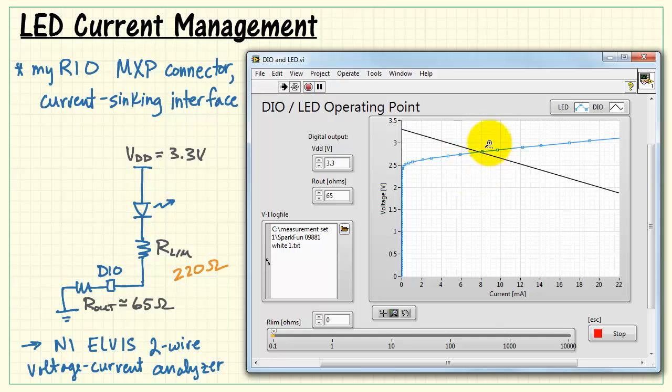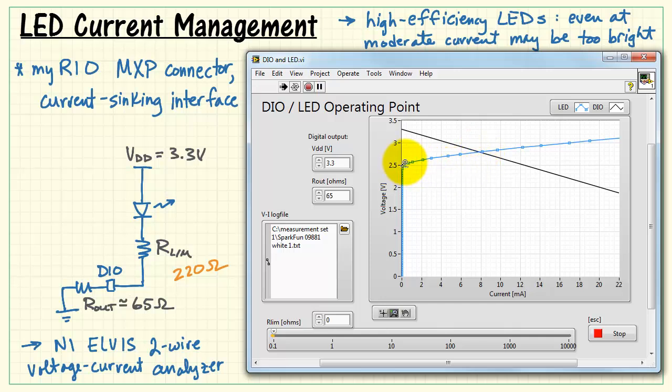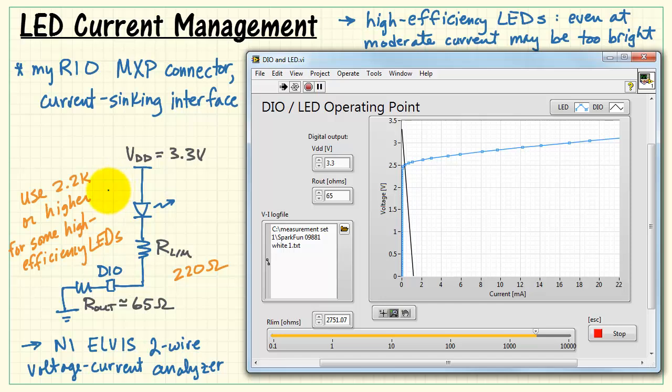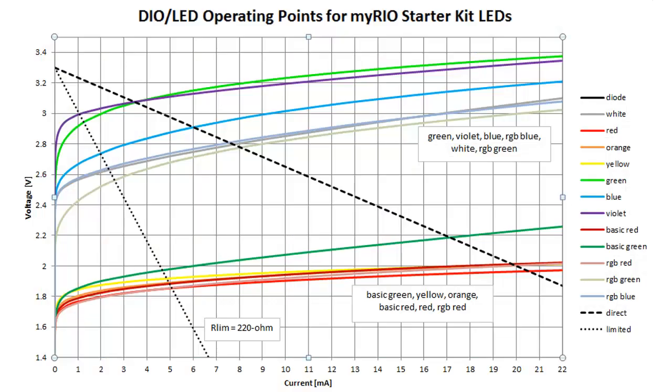Now one other consideration I'd like to mention, looking again at the white LED. Even though the current is not too bad at 8 milliamps, we might find that this is still way too bright for the requirement. This is often true of high efficiency LEDs. If we get the operating point a little closer to the knee area, which is well under 1 milliamp, we might find that we're getting a good intensity if we're trying to use it as an indicator and not necessarily trying to use it as a flashlight. For some high efficiency LEDs, using a 2.2K resistor or higher might be appropriate.